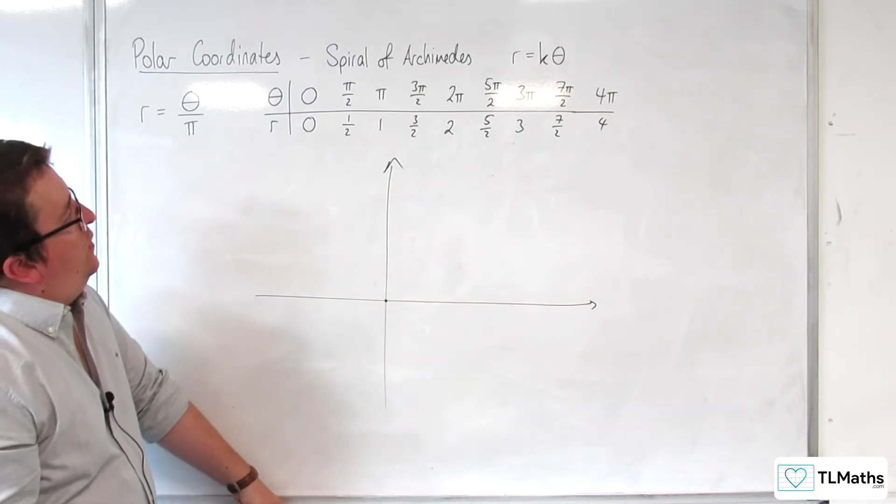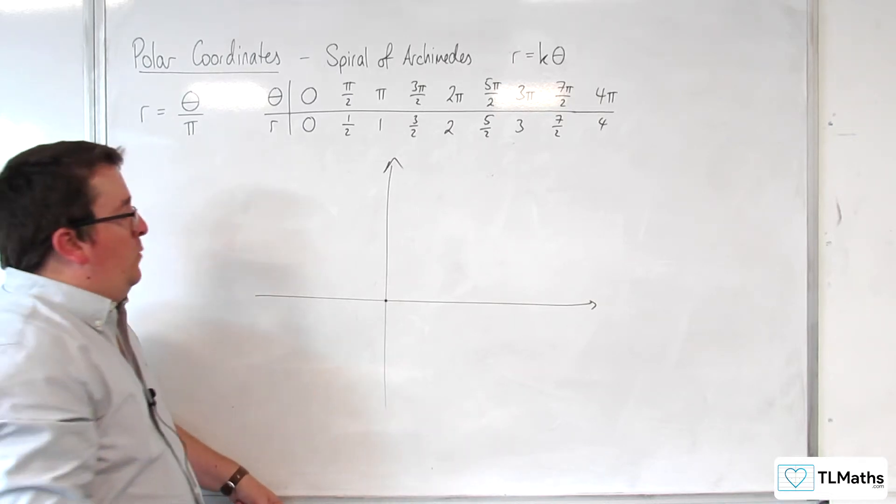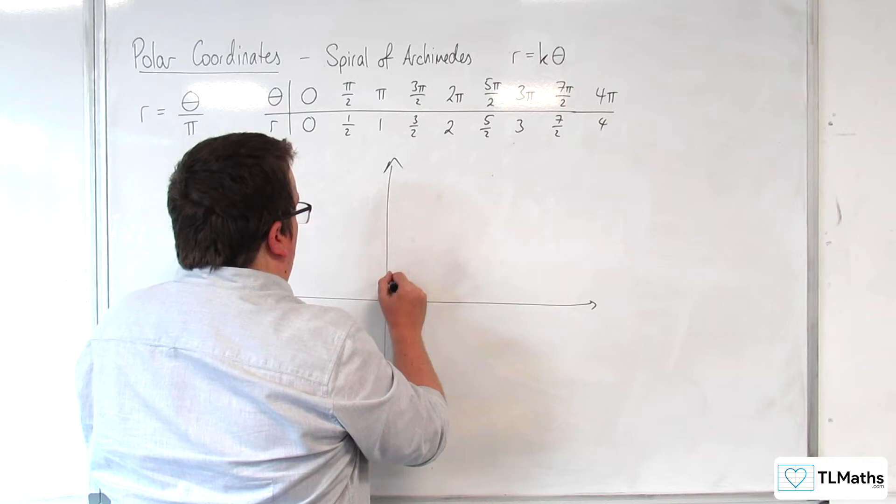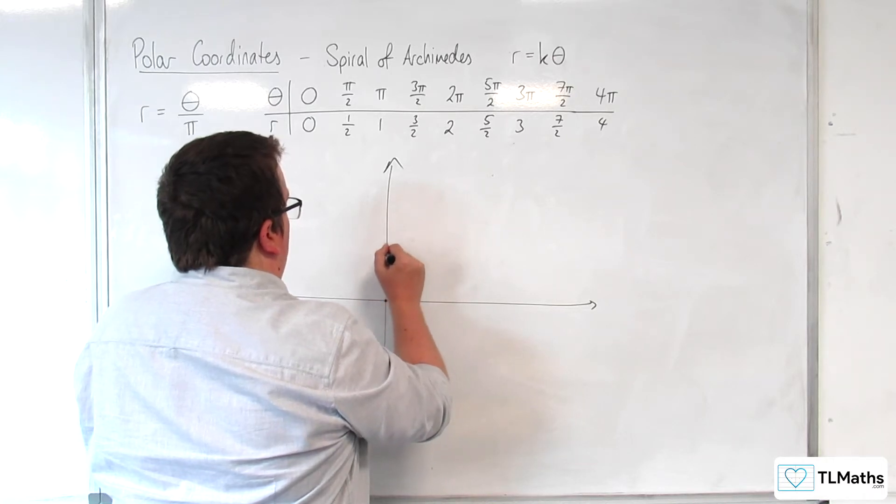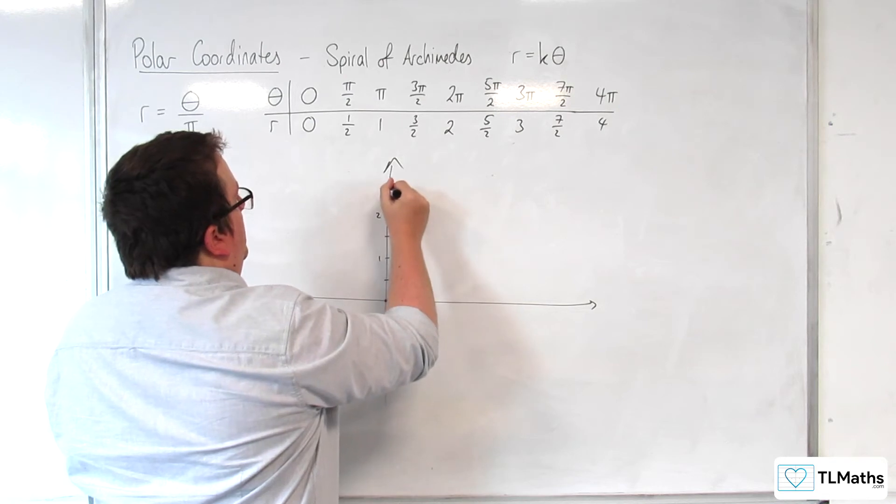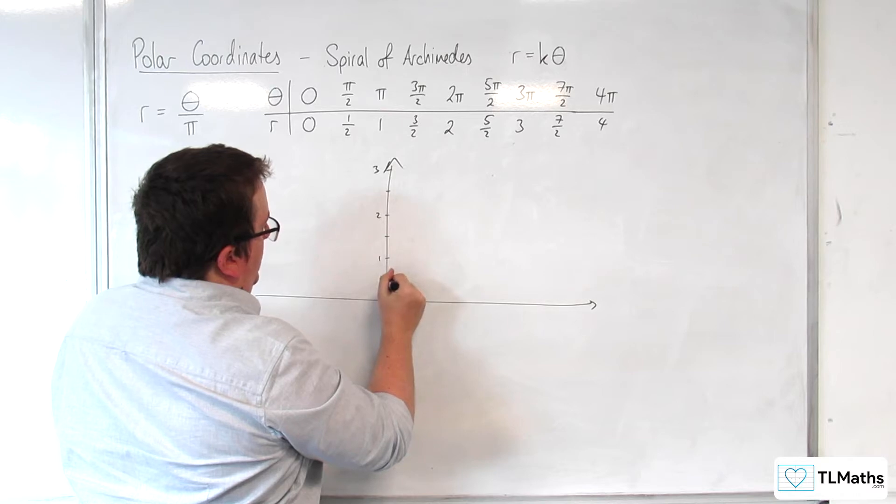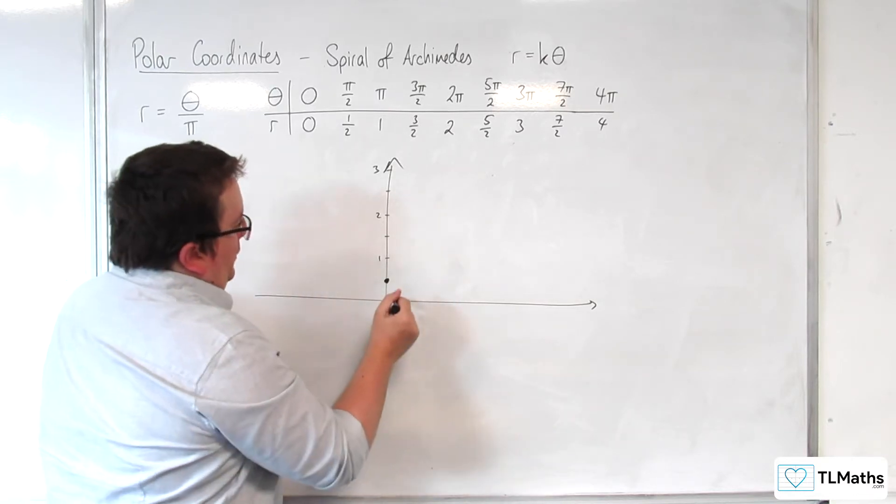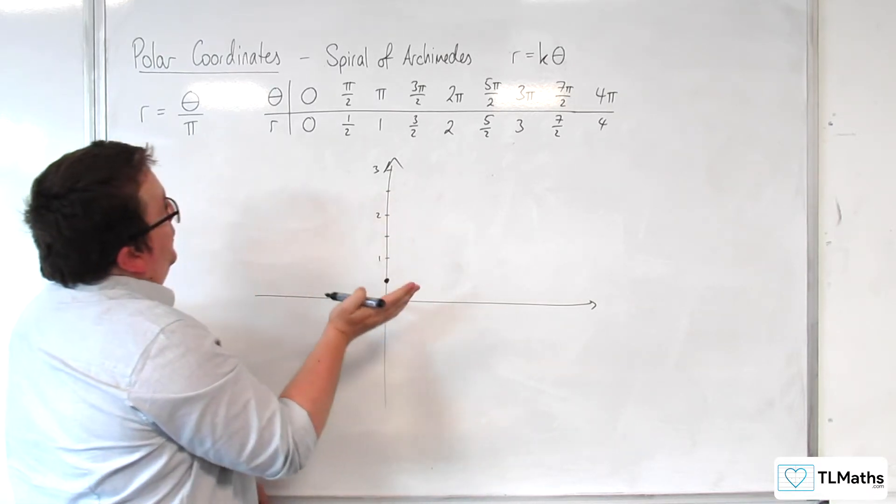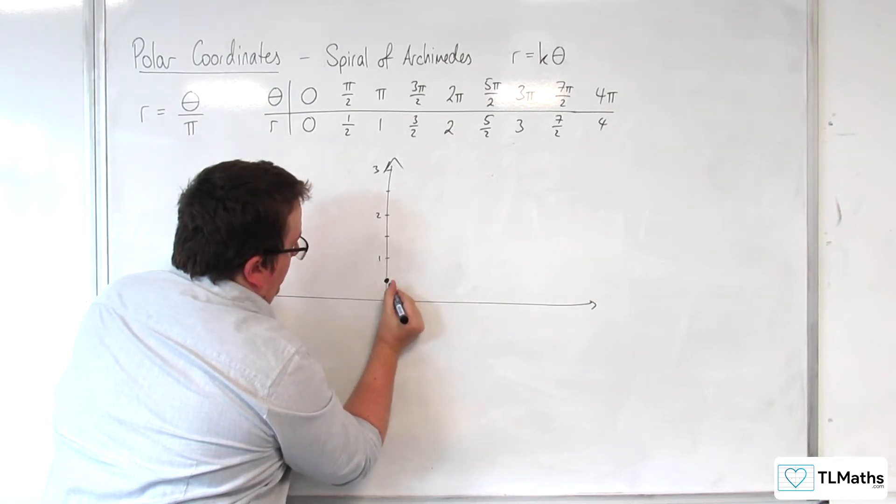And then when theta is pi over 2, r is going to be 1 half. So, 1 half, 1, 3 halves, 2. Then up to 3. OK. So, we're going to come around to this point here. So, what happens is that as theta is increasing, r is increasing. And so, it starts off like this.